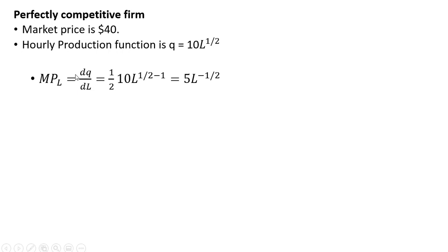We're going to get the marginal product of labor and take the derivative of this production function with respect to L units of labor. The exponent here on the L term comes down in front, so one-half times 10 gives us 5. And then we need to subtract 1 from that exponent, so one-half minus 1 leaves us with L raised to the minus one-half power.